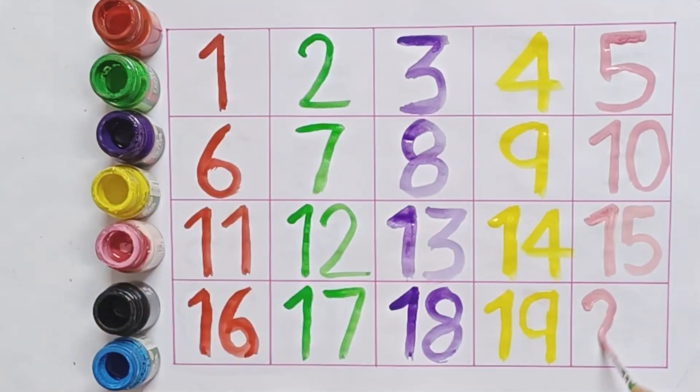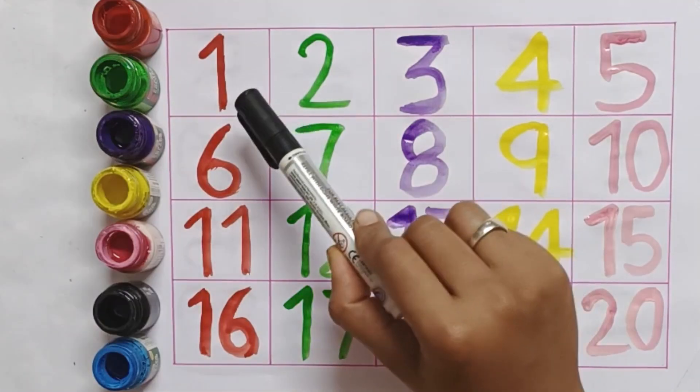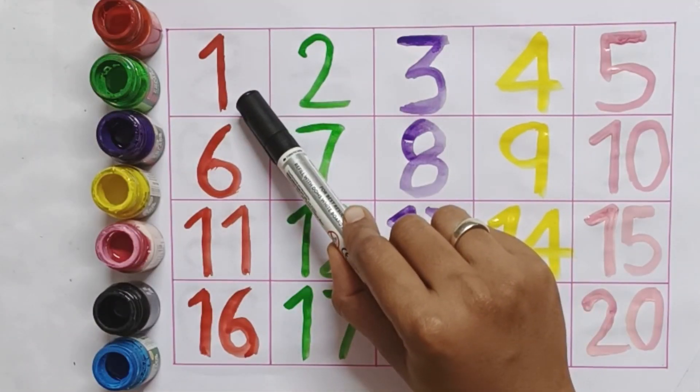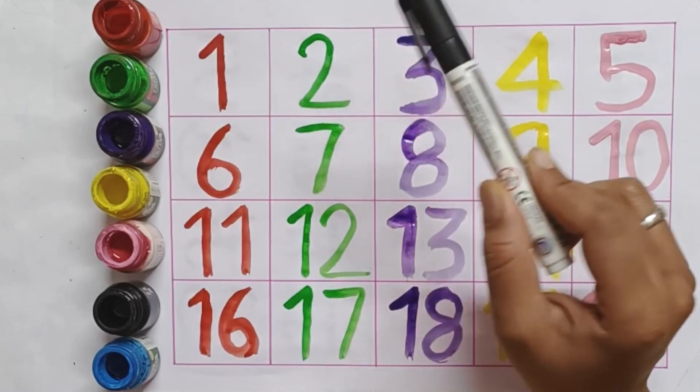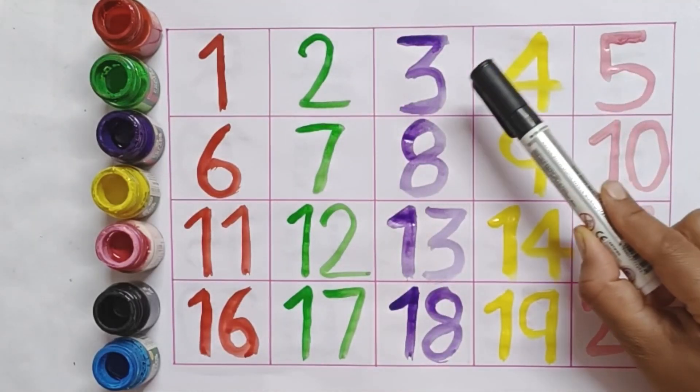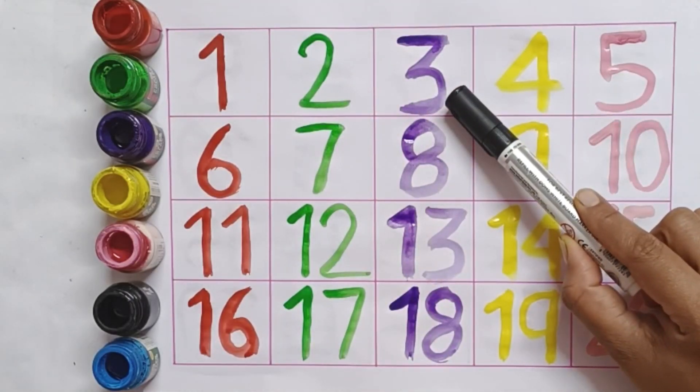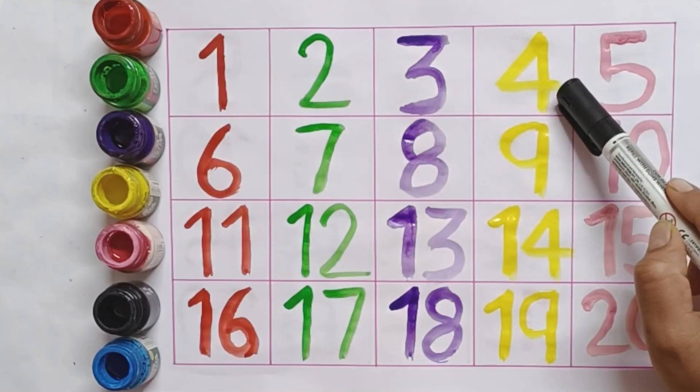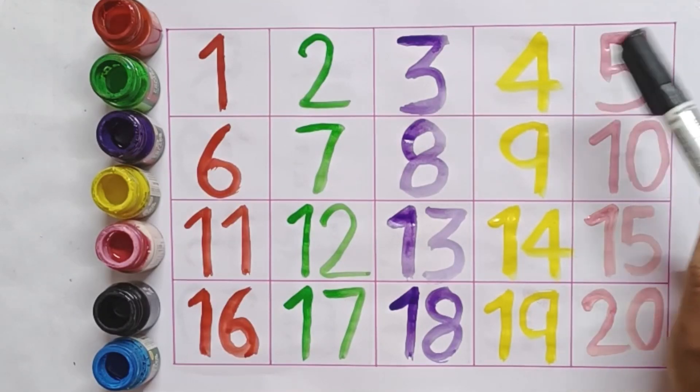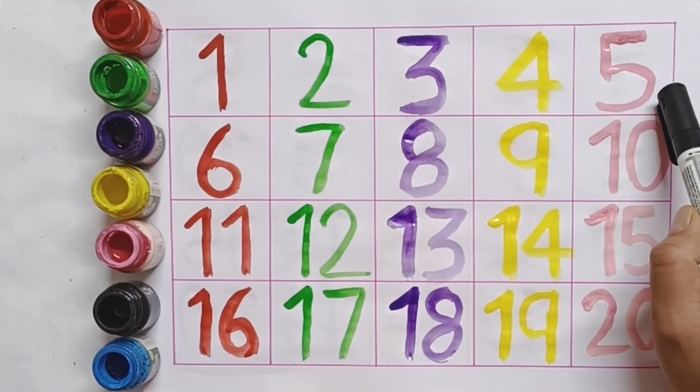1. O-N-E-1. 2. T-W-O-2. 3. T-H-R-E-E-3. 4. F-O-U-R-4. 5. F-I-V-E-5.